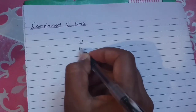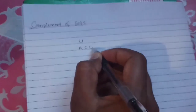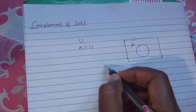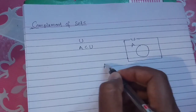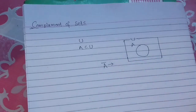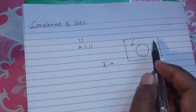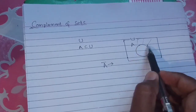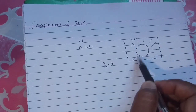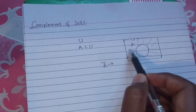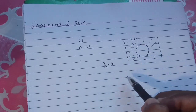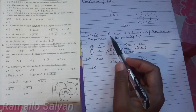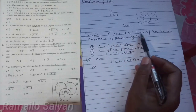Let's learn with the definition. Suppose U is the universal set and A is a subset of U. Then A complement means the set of elements contained in U but not in A. That is the definition of A complement.